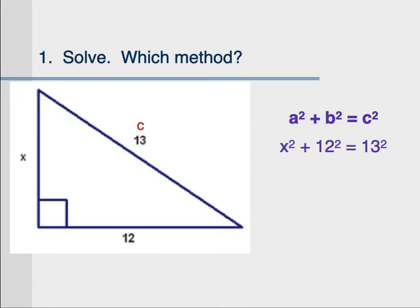When you plugged in a, b, and c and simplified, you then got x squared by itself, and when you square root it to get x completely by itself, you should get 5.